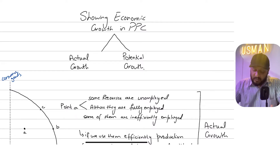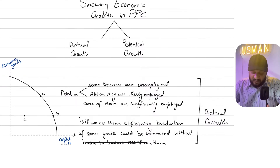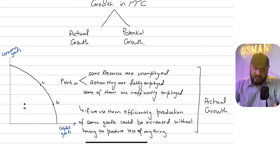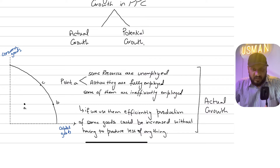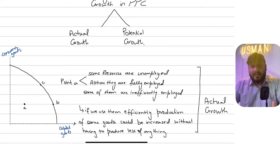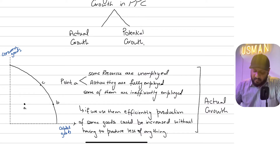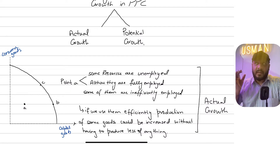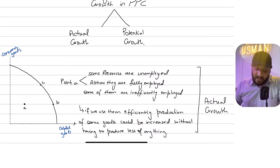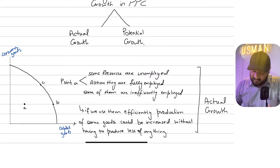What is actual growth? Actual growth basically refers to increasing GDP using your existing resources, your spare capacity, or your idle resources that exist in the economy. On the other hand, potential growth is basically an increase in productive capacity. First, let's see what actual growth is and how we represent that on the PPC.